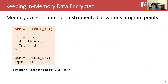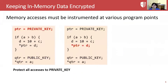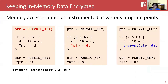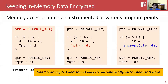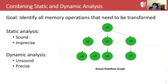In order to protect sensitive data with this encryption scheme, all memory operations that involve the sensitive data must be identified, and then these memory operations must be instrumented with encryption and decryption logic. Thus, we need a principled and sound way to automatically instrument software. In general, there are two ways to analyze a program to identify which memory operations must be transformed. The first is static analysis, which is sound but imprecise: it can identify all memory operations that must be transformed, but the results are an over-approximation.